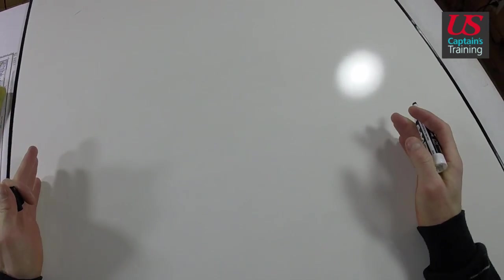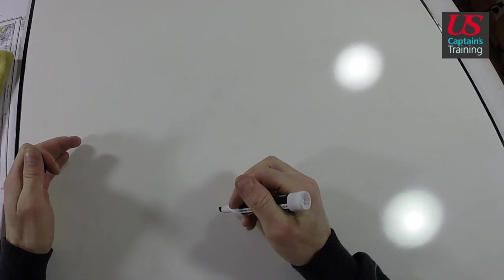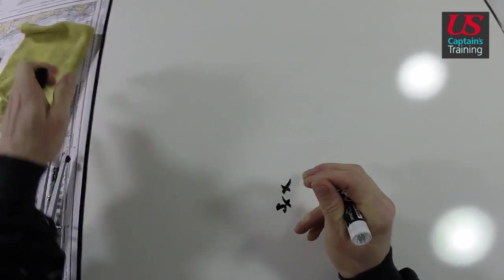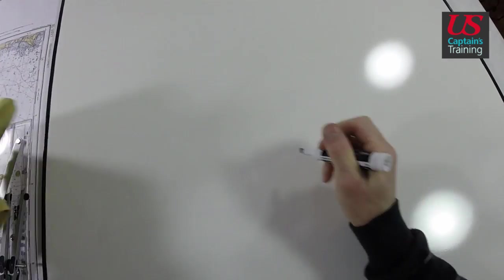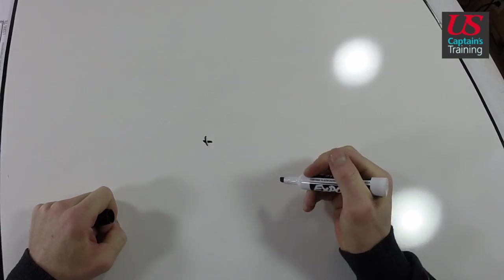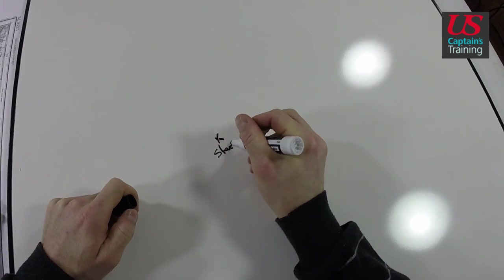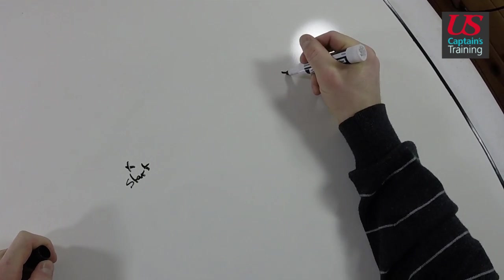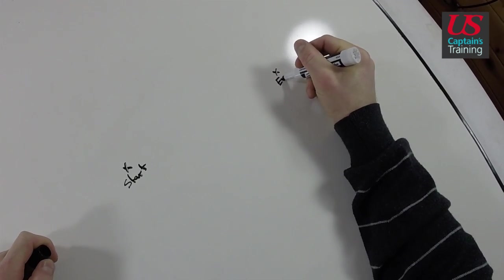I start by finding a starting point. Let's start up here so I have more room. This is our starting point. Then the problem says we actually ended up over here. This is where we actually ended up.